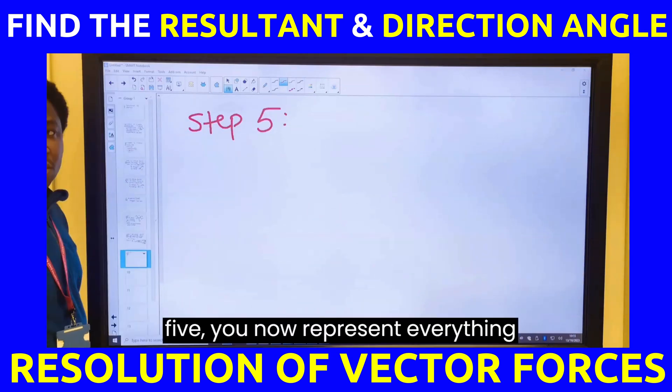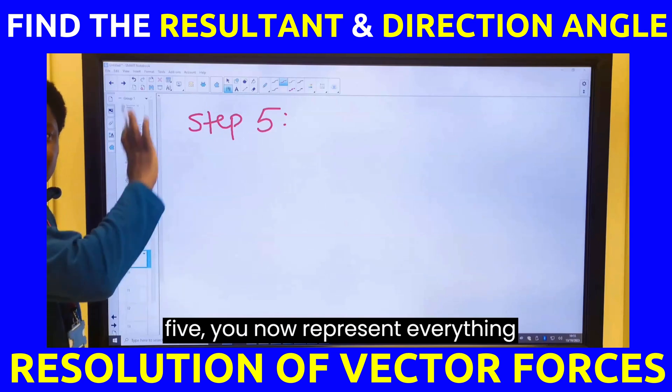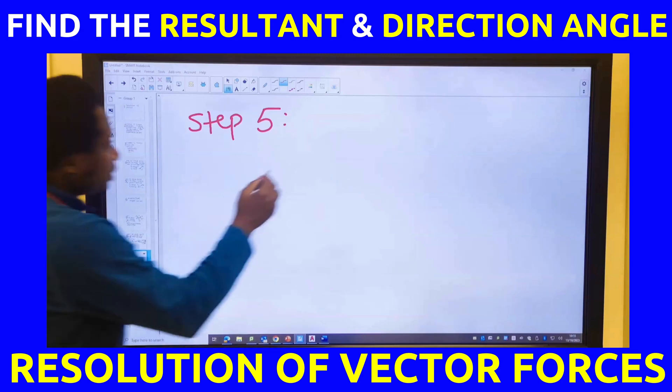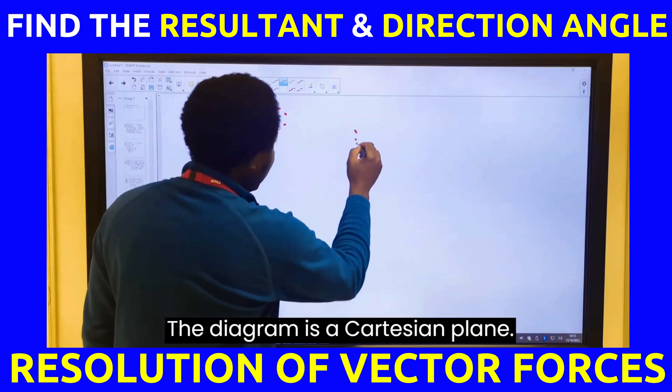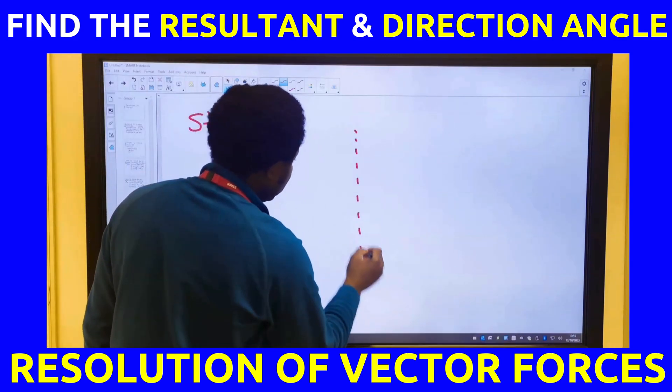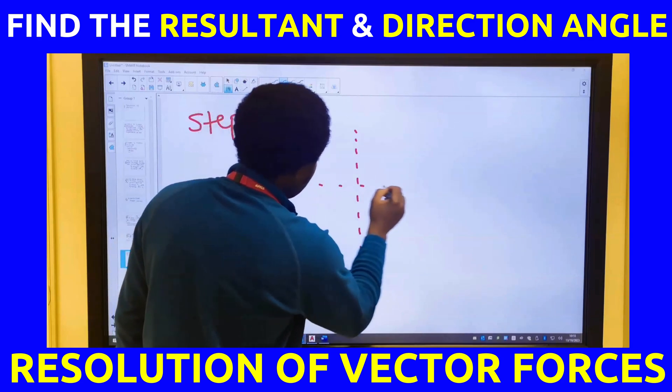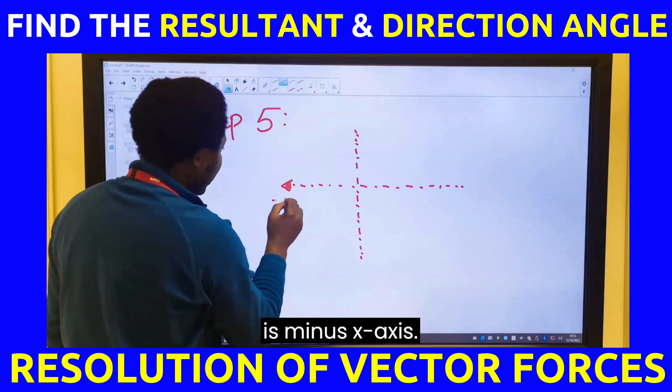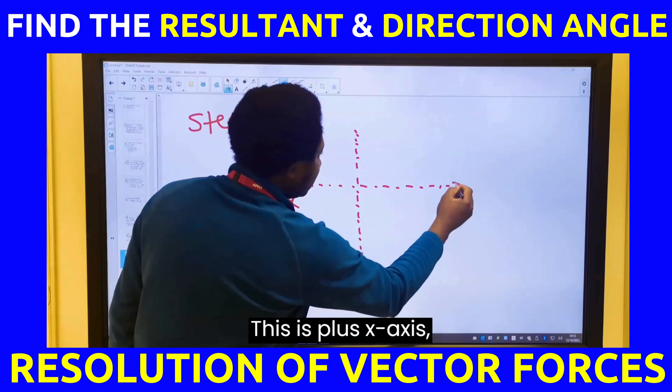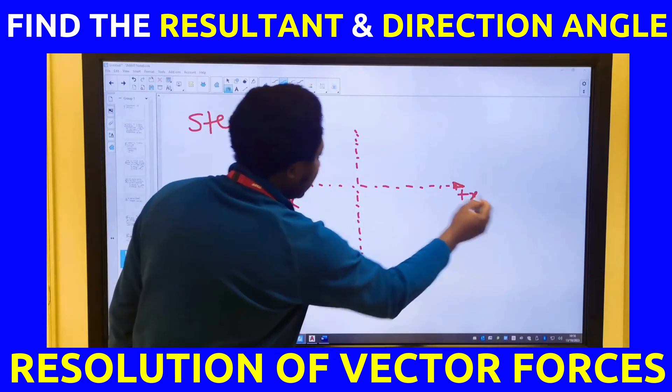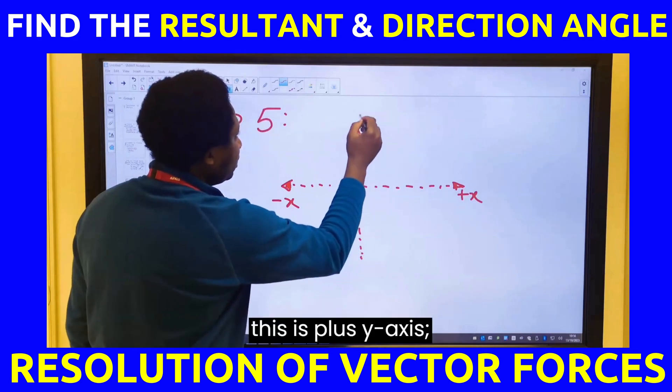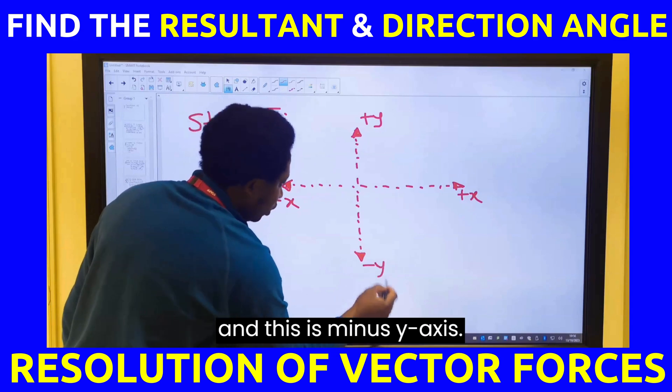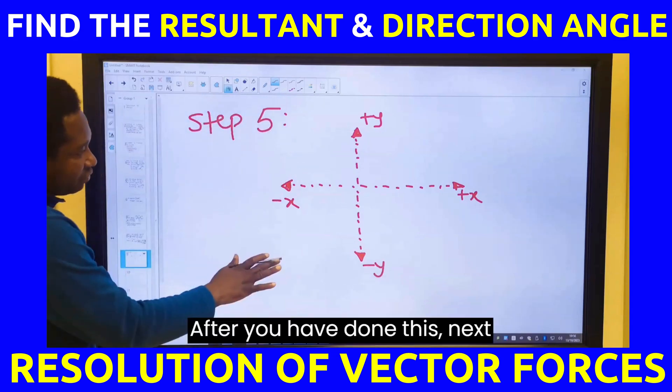Step 5. In step 5, you now represent everything you have done in the final diagram. The diagram is a Cartesian plane. This is the Cartesian plane. This is minus x-axis, this is plus x-axis, this is plus y-axis, and this is minus y-axis.